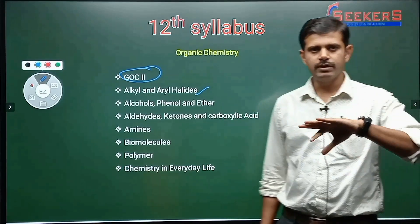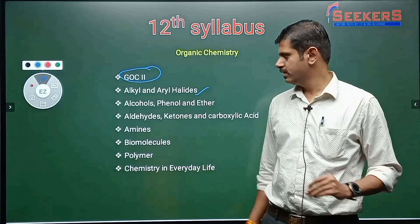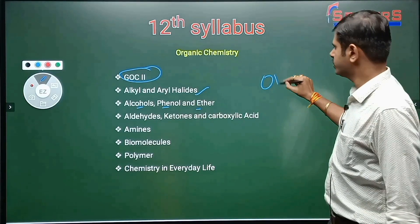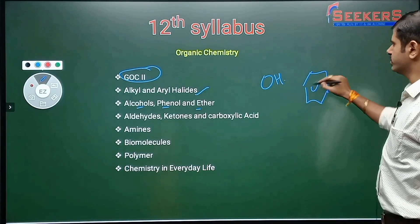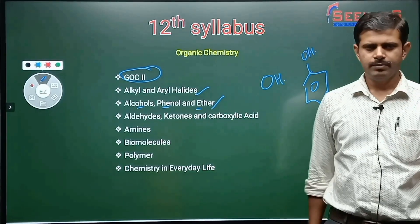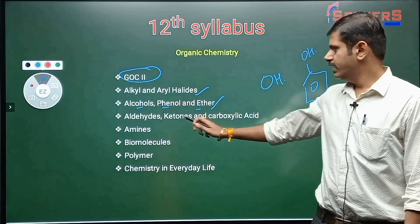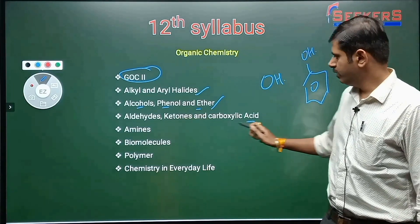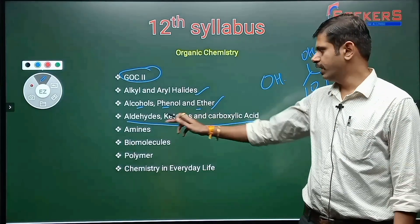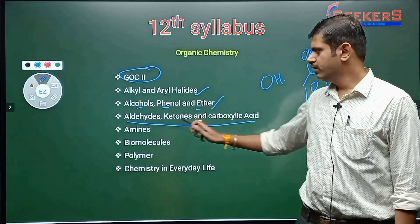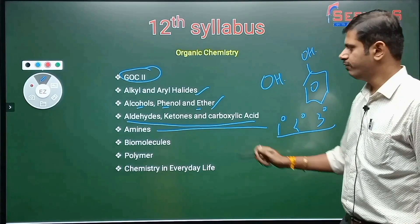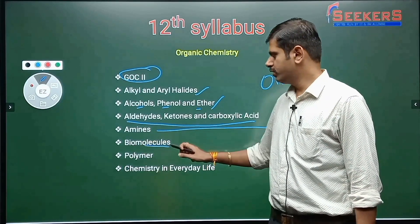Next we'll talk about alkyl and aryl halides — what are the reactions of halides and how we can prepare alkyl halides. Then alcohol, phenol, and ether — alcohol has an -OH group, phenol has a benzene ring with an -OH group — covering their properties and methods of preparation. Then aldehyde, ketone, and carboxylic acid — again same: preparation, properties, and reactions.